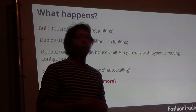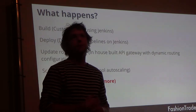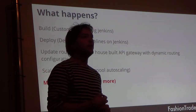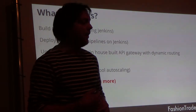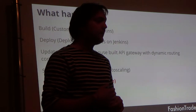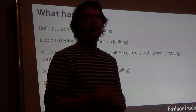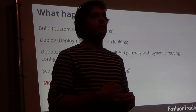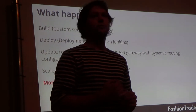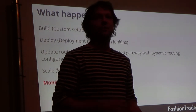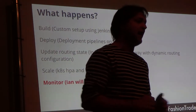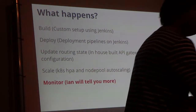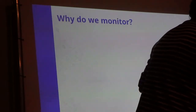As a result of that deployment, our API gateway updates its routing state at runtime to make sure the API routing matches whatever is deployed at that point. Kubernetes will scale things as required, and finally, all of that also magically gets monitored — and that's what this talk is about.